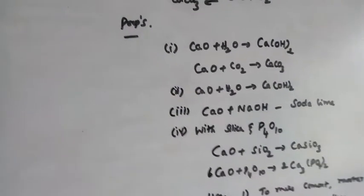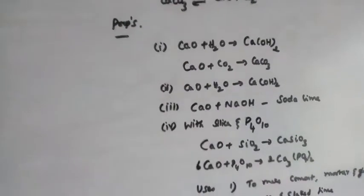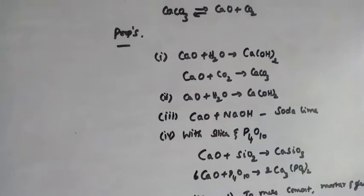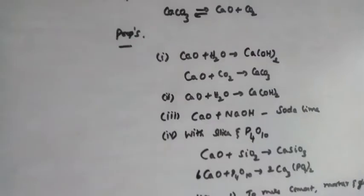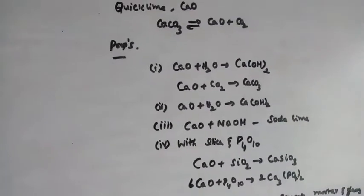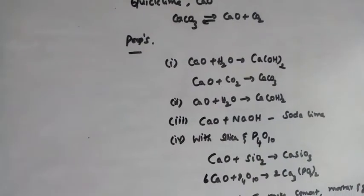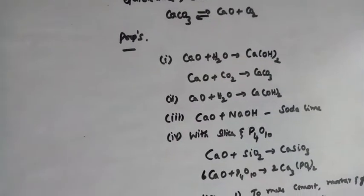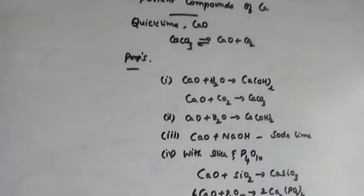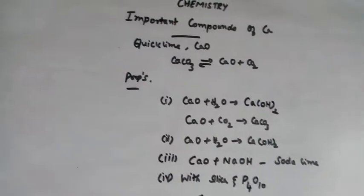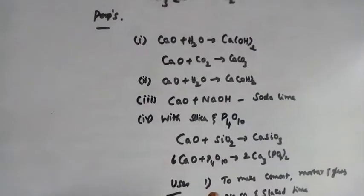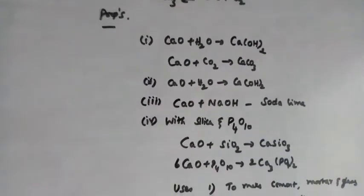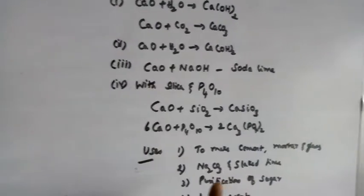Soda lime is used for decarboxylation — that is, removal of carbon dioxide. Calcium oxide and sodium hydroxide together form soda lime, which acts as a decarboxylating mixture. Calcium oxide also reacts with acidic oxides like silica and phosphorus pentoxide to give calcium silicate and calcium phosphate respectively.